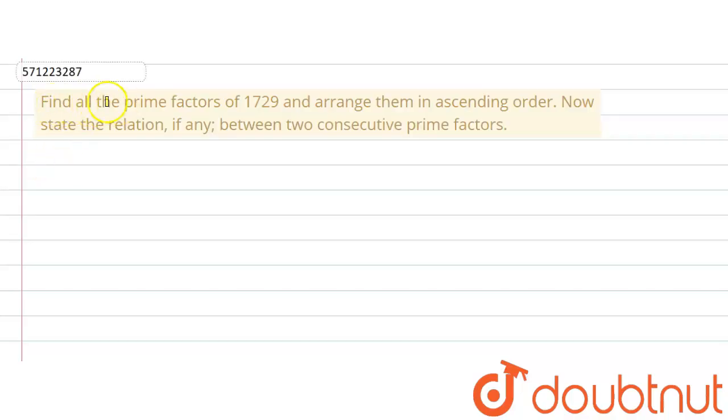The given question says find all the prime factors of 1729 and arrange them in ascending order. So we need to find all the prime factors of 1729 and arrange them in ascending order, which means increasing order.